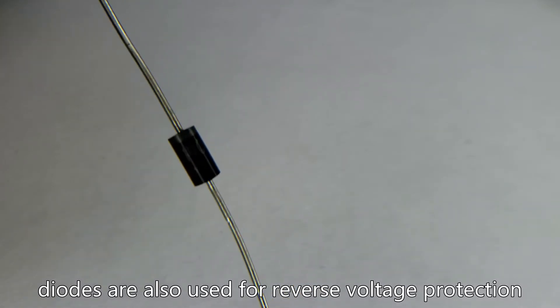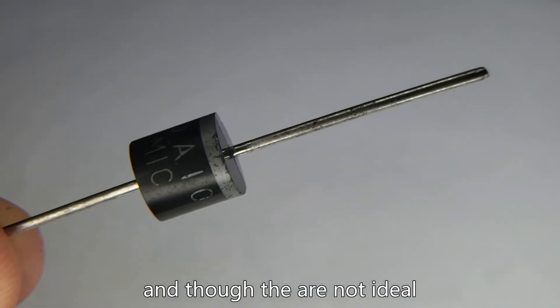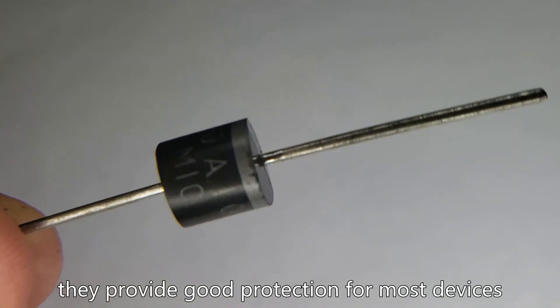Diodes are also used for reverse voltage protection. And though they are not ideal, they provide good protection for most devices.